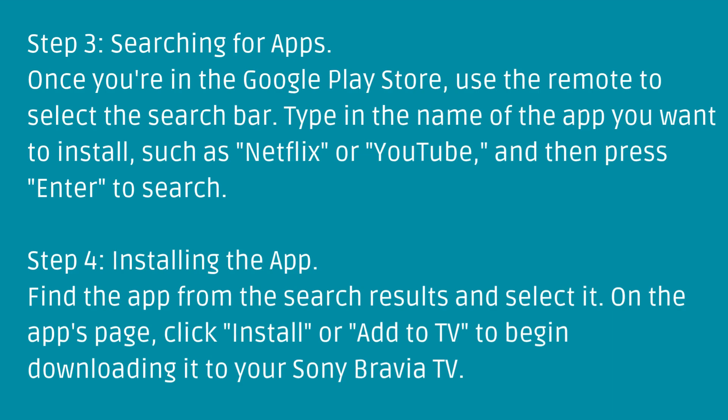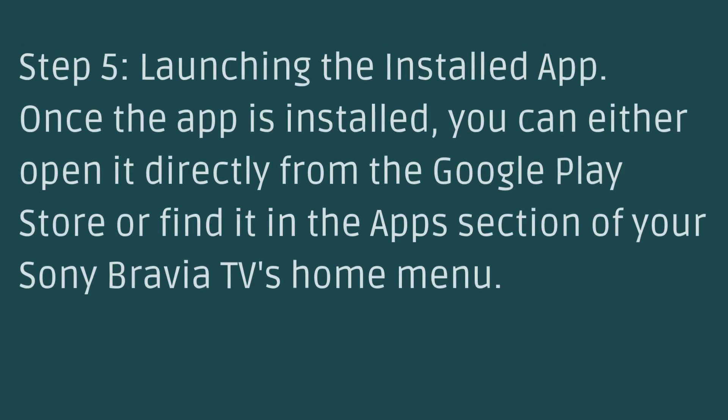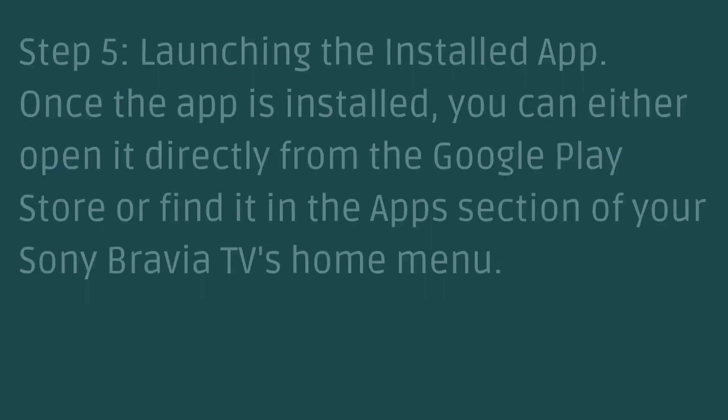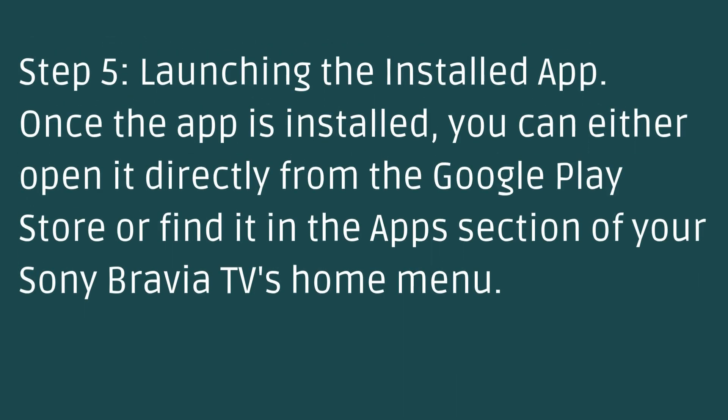Click Install or Add to TV to begin downloading it to your Sony Bravia TV. Step 5: Launching the installed app. Once the app is installed, you can either open it directly from the Google Play Store or find it in the apps section of your Sony Bravia TV's home menu.